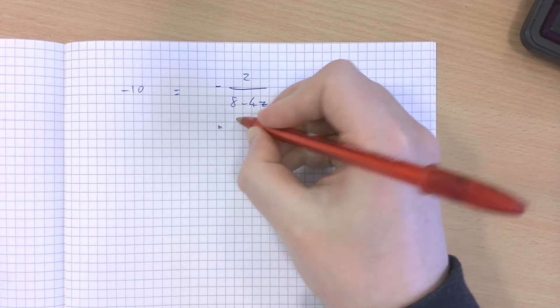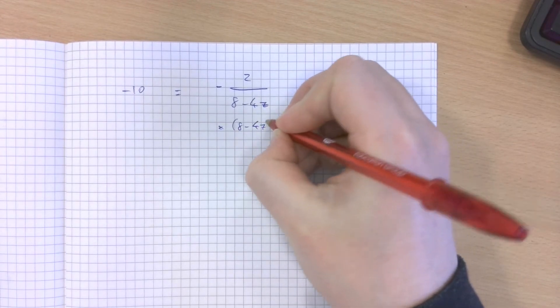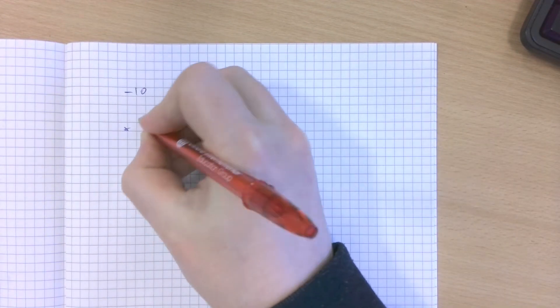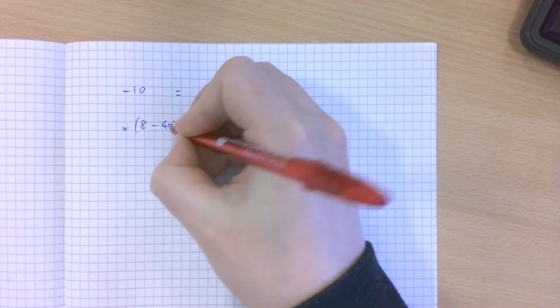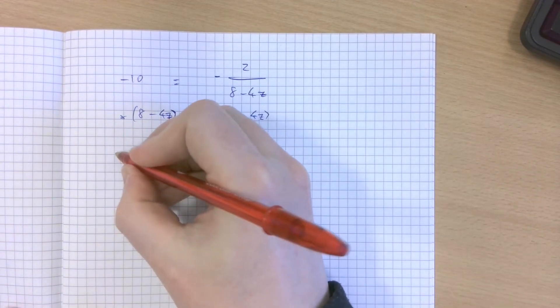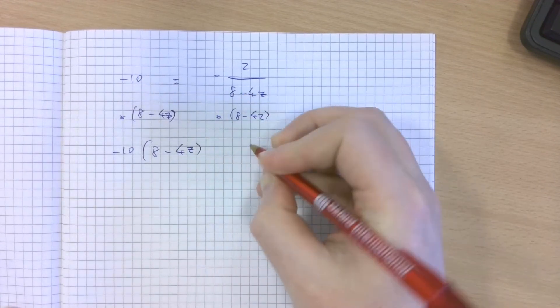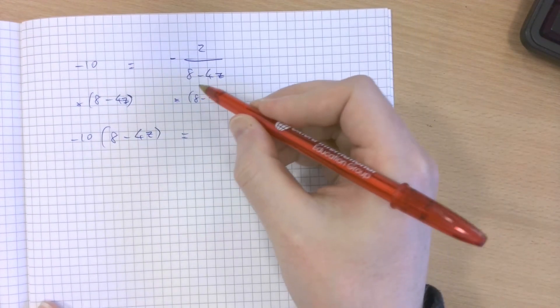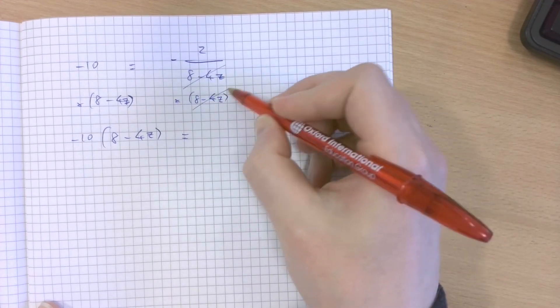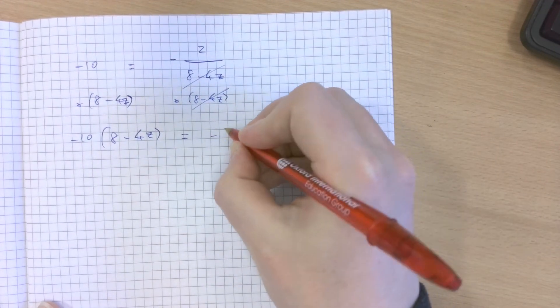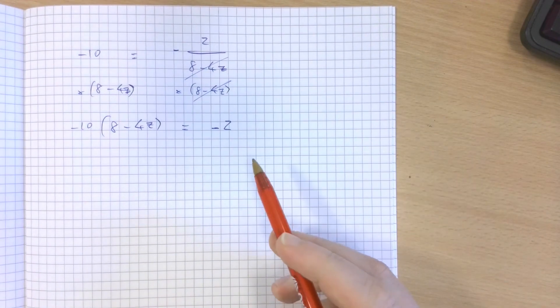So doing that, multiplying both sides by 8 minus 4z, leaves me with negative 10 times 8 minus 4z, a single bracket. And then the denominator of this fraction is cancelled out by that multiplication. And I'm left with minus 2 on the right-hand side only.